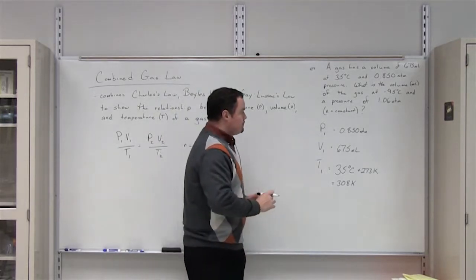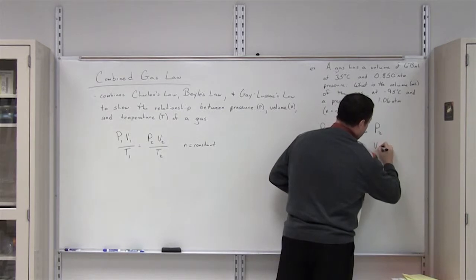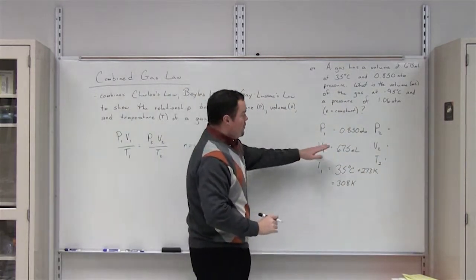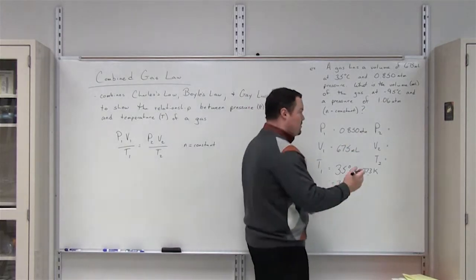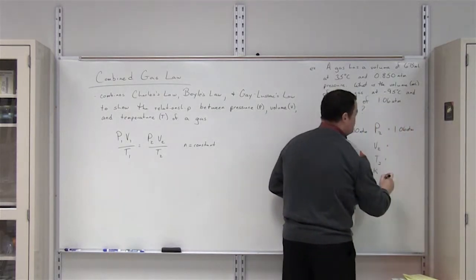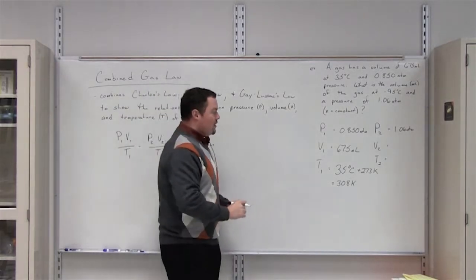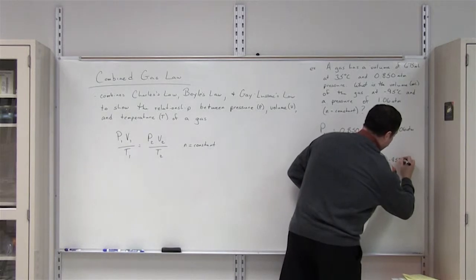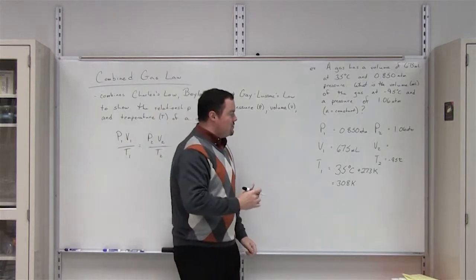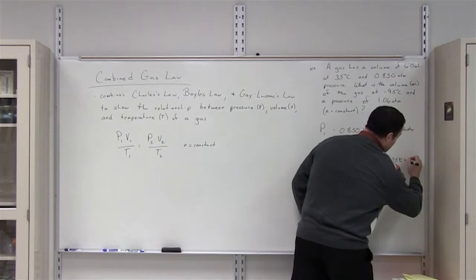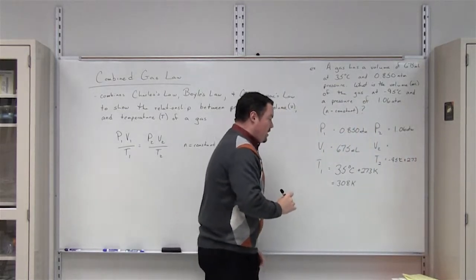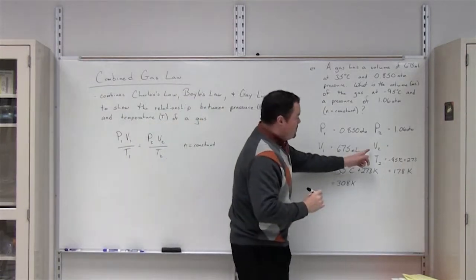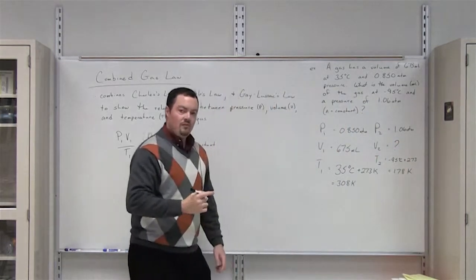The problem also gives us the condition 2 variables. The pressure changes from 0.850 atmospheres up to 1.06 atmospheres. The temperature decreases to negative 95 degrees Celsius, which must be converted to Kelvin by adding 273, giving us 178 Kelvin. The only unknown variable is the volume under condition 2, which is what we're solving for.